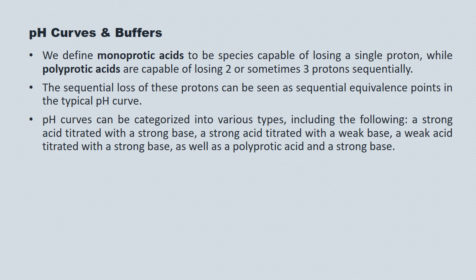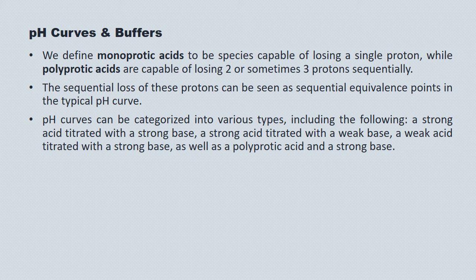pH curves can be categorized into various types: a strong acid titrated with a strong base, a strong acid titrated with a weak base, a weak acid titrated with a strong base, and a polyprotic acid titrated with a strong base. What's missing is a weak acid titrated with a weak base — this type of titration doesn't proceed typically because you get a very loose and sloppy pH curve and don't get much information from it.